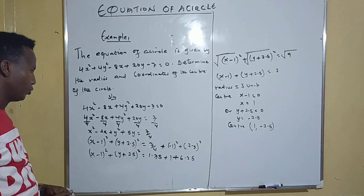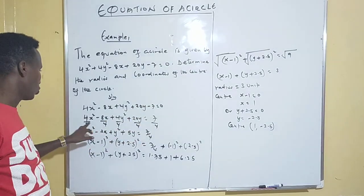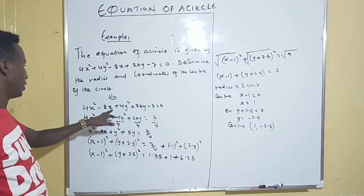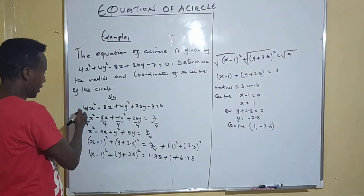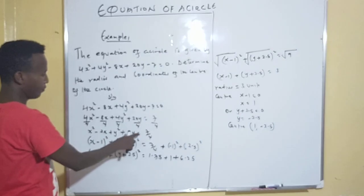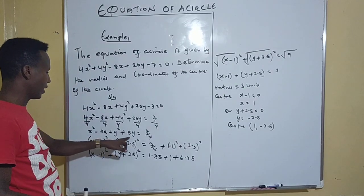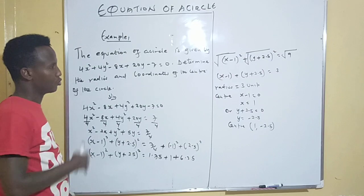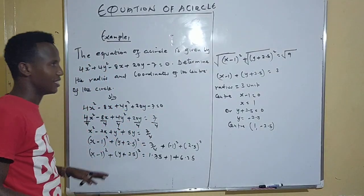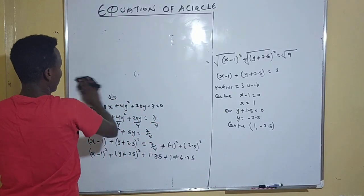I hope you are with me. To recap: first move the constant to the other side giving 4x² - 8x + 4y² + 3y = 7, then divide through by 4 to get x² - 2x + y² + 5y = 7/4, then add the half-coefficient squared to the right side. These are the kinds of KCSE exam questions — follow this procedure to get the correct answer.